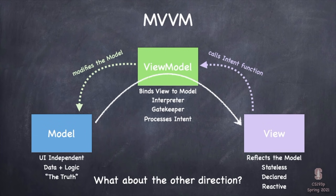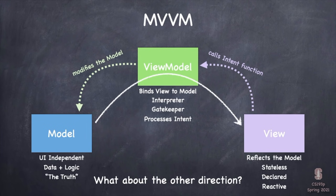The ViewModel then translates those intentions into specific modifications to the model. For example, in an application where the model is a travel server, the typical user's intent might be 'book this vacation' — not 'contact travel server to confirm previous reservation with this ID.' The view just calls some simple function in the ViewModel like 'book it,' since that's the user's intent, and the ViewModel does all the other stuff as part of its responsibility to facilitate communication between the view and the model.